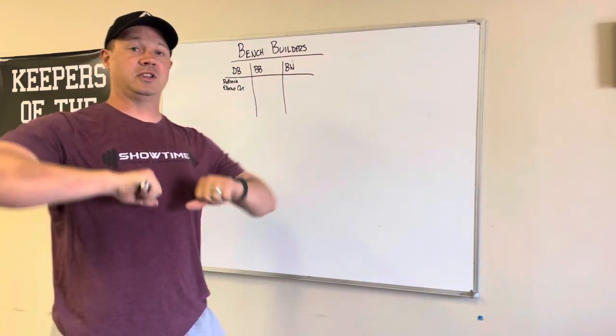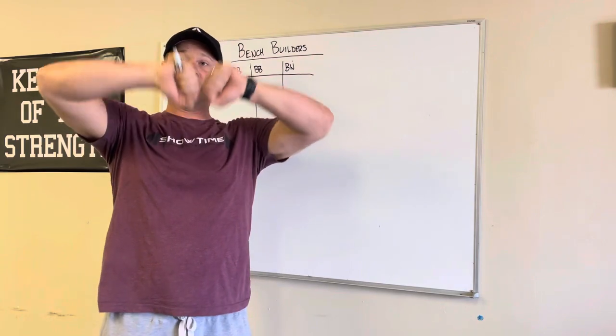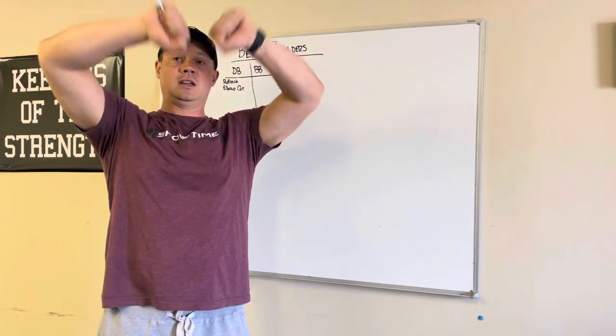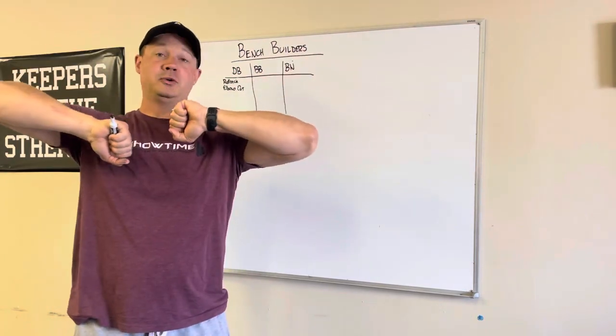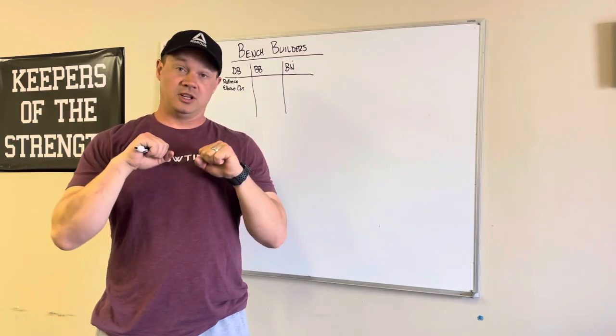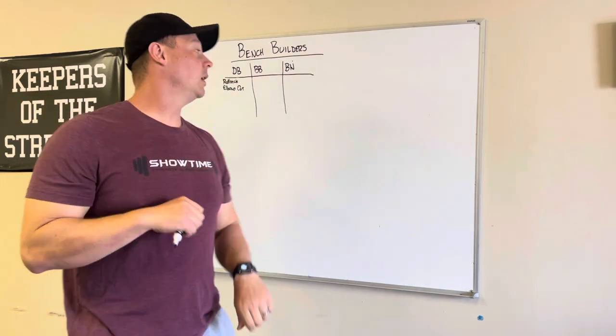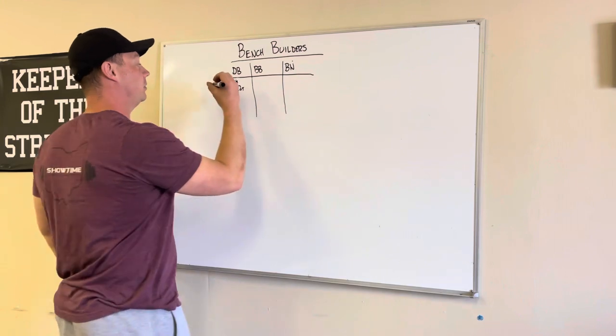So elbows out extension. So that's where you take the dumbbells like this and then just pull them apart. Same thing. Keep the elbows straight out to the side. Don't let them drop. Don't let them come down in. That's another great builder.